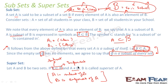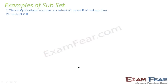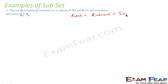Let's take examples of subsets. Q is the set of all rational numbers and R is the set of all real numbers. Q is a subset of R because any rational number is also a real number. Real numbers include both rational and irrational numbers, so any rational number must be a real number. Therefore Q ⊆ R, where Q is the rational number set and R is the bigger real number set.